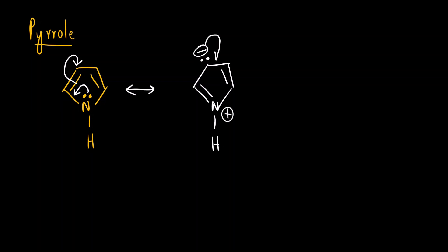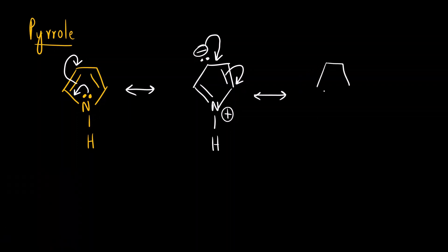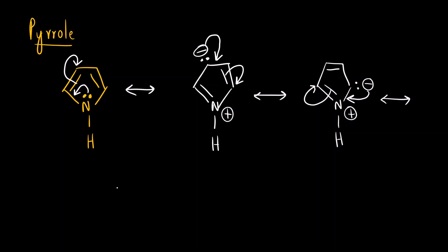The next step: this will move here and the pi electrons will move here. Drawing the five-membered ring again: nitrogen forming four bonds gets a positive charge, the pi bond has shifted here, and the lone pair comes here as a negative charge. We continue until we get the first structure back. This will move here and again the pi electrons will move. We get a five-membered ring with a pi bond, lone pair, and negative charge. Nitrogen is again forming four bonds, so it gets a positive charge.